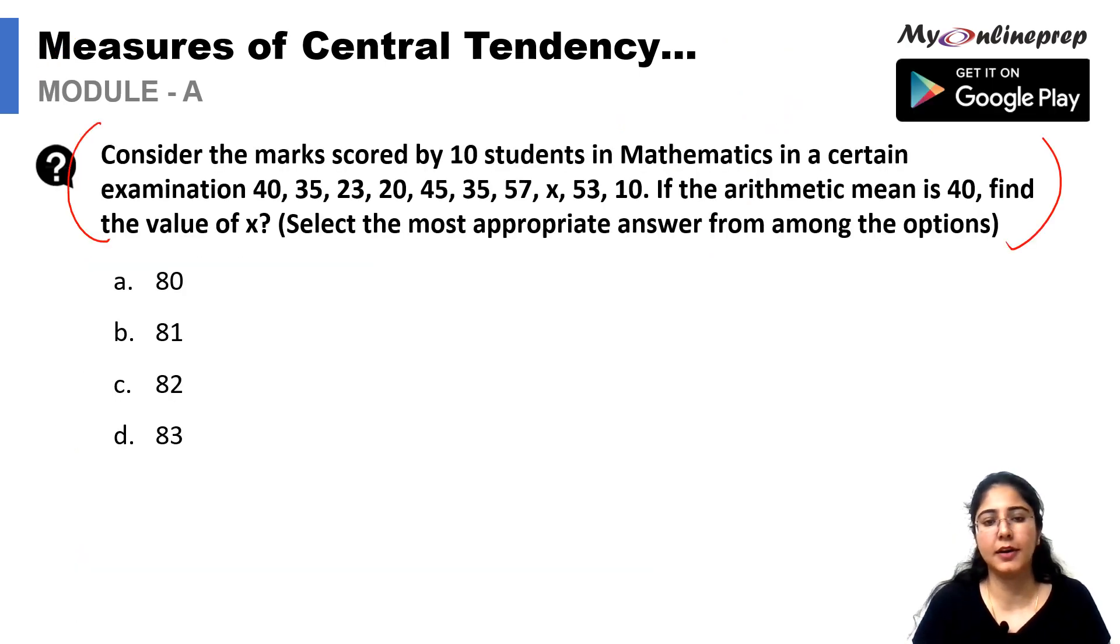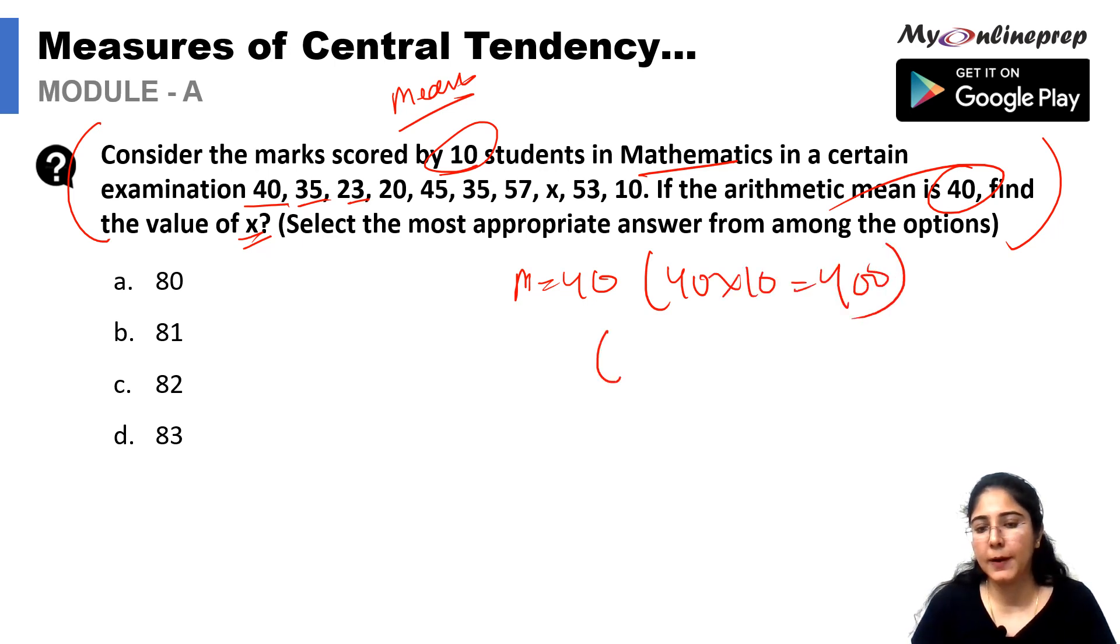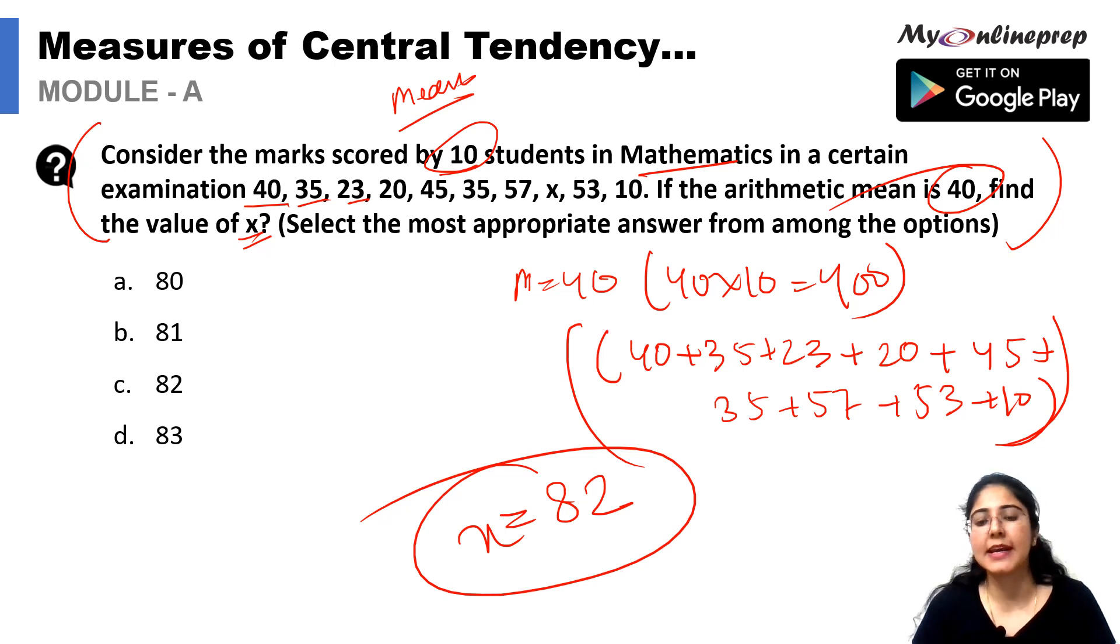First question is about your average, that is Measures of Central Tendency. Consider the marks obtained by 10 students in mathematics where we have 40, 35, 23 and so on. Arithmetic mean is given to us as 40 where we have to find the x value. If arithmetic mean is given as 40, the total marks would be 40 into 10 equals 400, and when we deduct 40 plus 35 plus 23 and all the given numbers from 400, we get one number which is being left out. 400 minus all these gives us the answer as 82, so the missing value of x equals 82. Option C is the correct answer.